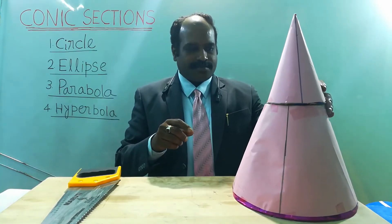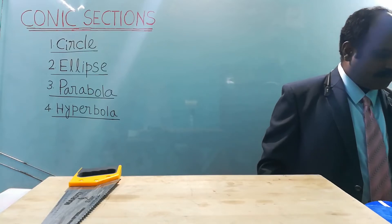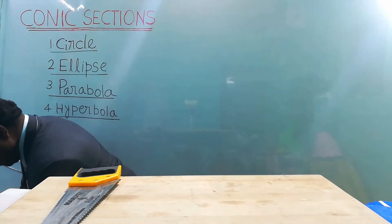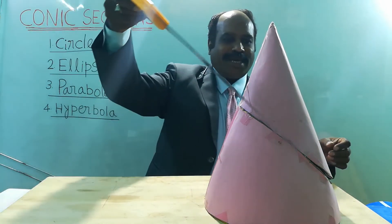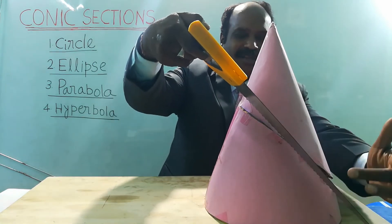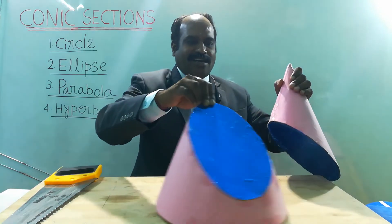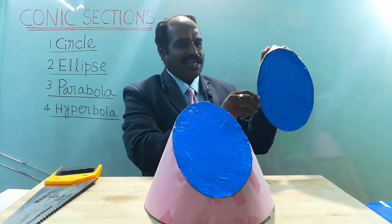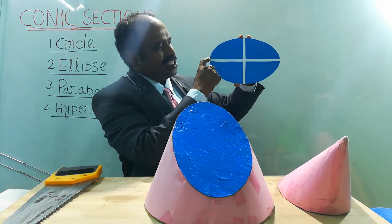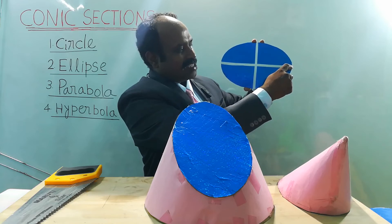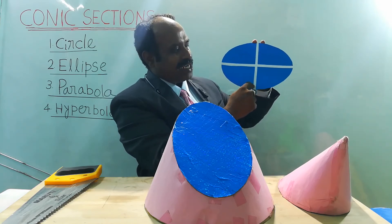Next, another cone is taken. Now I am going to cut the cone inclined to the base, making some angle called theta. When the cone is cut inclined to the base, the section obtained is called an ellipse. This cut portion is the ellipse. This is called the vertex part of the ellipse, and this is called the opposite vertex. The line joining the vertex and the opposite vertex is called the major axis, and a line drawn perpendicular to the major axis is called the minor axis of the ellipse.